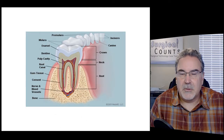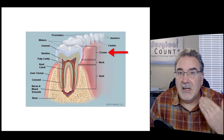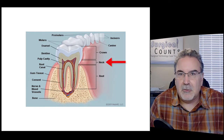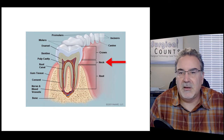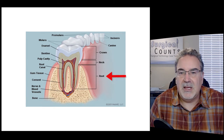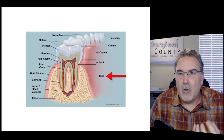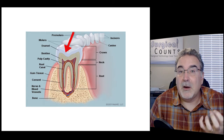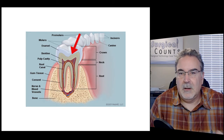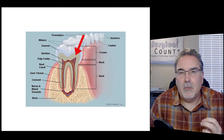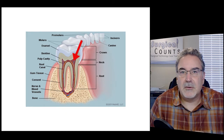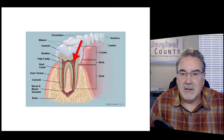Each tooth has three general areas. We have the crown, which is the exposed portion of the tooth. We have the neck, which is a little narrowing that fits right at the edge of the gums. And then we have the root that goes down into the bone and holds the tooth in place. Surrounding the crown, we have the enamel — the white hard material. A little deeper under the enamel, we have dentin, which is somewhat softer. And filling the center of the tooth, we have the pulp cavity, which contains blood vessels and nerves that feed the tooth.